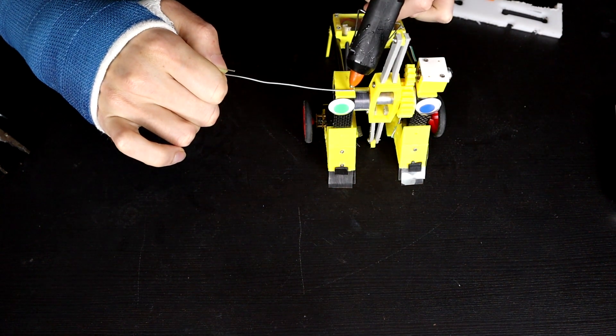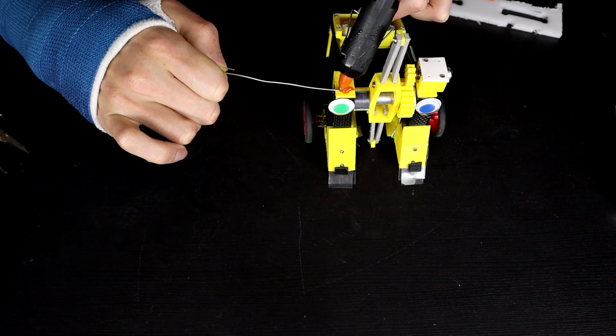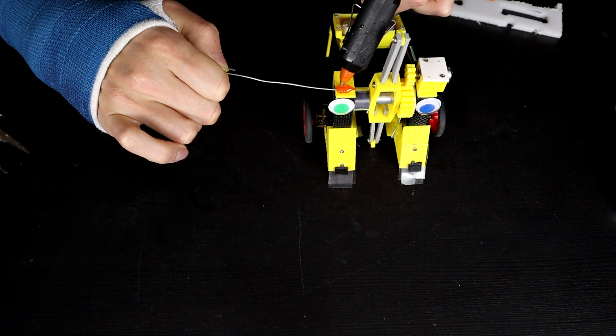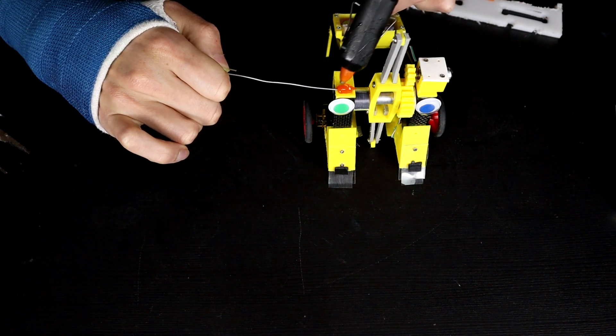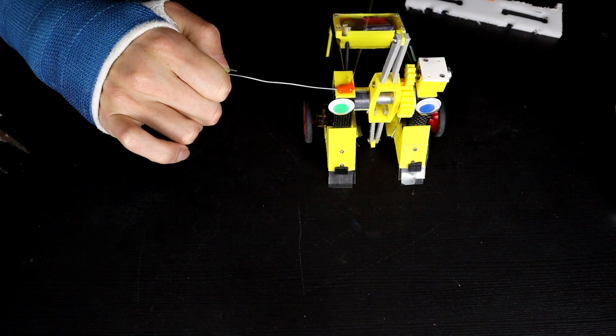I mean, obviously, the problem with hot glue is I'm going to need to hold this wire in place while the hot glue dries. And if I wobble it too much, it's going to completely destroy the actual hot glue attempt.